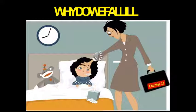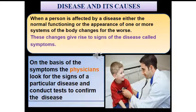Today we will discuss about the types of diseases and how they spread. Now, before starting with the topic, let's find out how a disease looks like. Disease means dis-ease. Dis-ease means discomfort — the person is not at ease. We call it a disease.